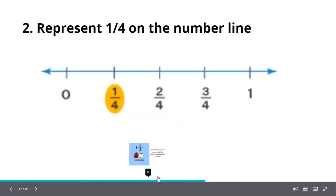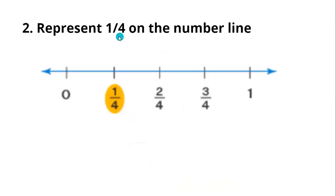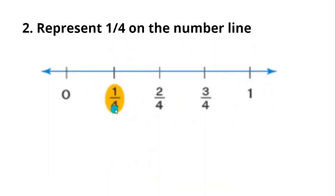Now the next problem: represent 1/4 on the number line. Same way — my denominator is 4, so 1 can be represented as 4/4, and in between it is 1/4, 2/4, and 3/4. We have to represent 1/4, so color that point — here it is 1/4.